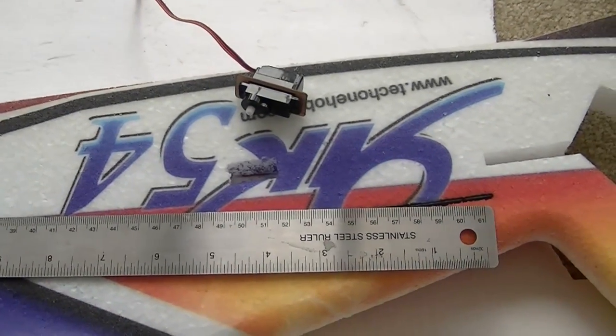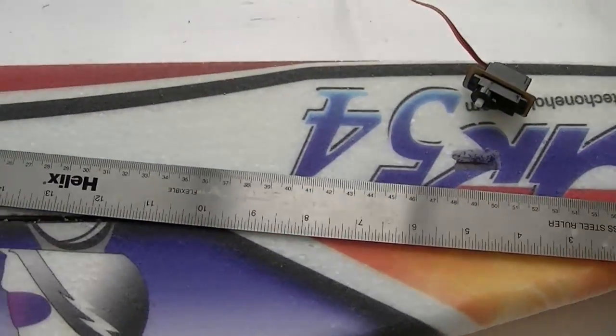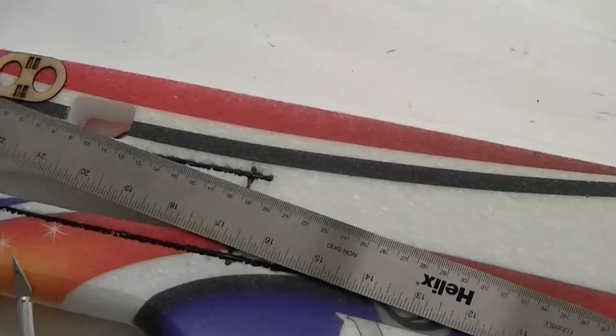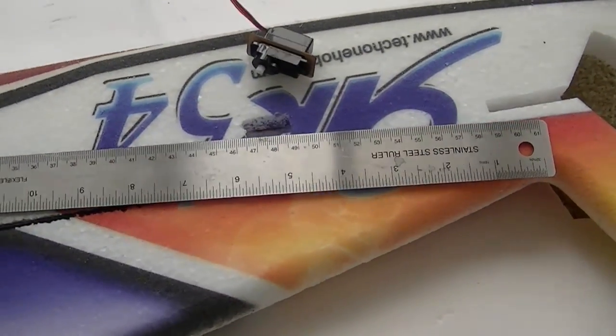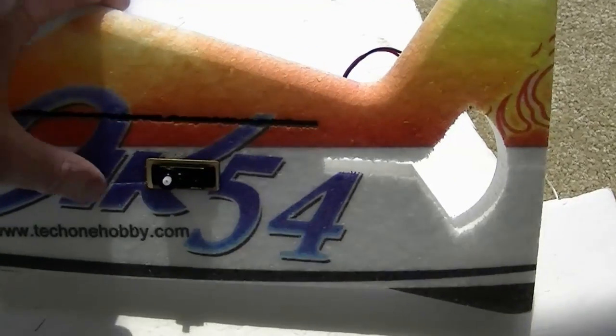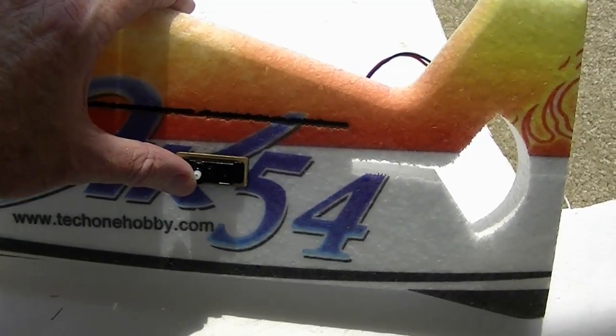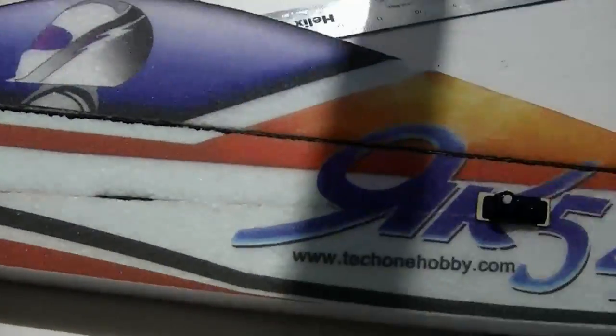Now that the elevator servo is installed, I'm going to use the same method to cut a slot for the rudder servo. Make a 10 millimeter deep slot with an exacto knife. So both the rudder servo and the elevator servo are now installed and hooked to the receiver. I just tested them a minute ago to make sure they both operate and that I didn't make any wiring mistakes.